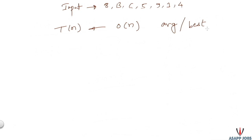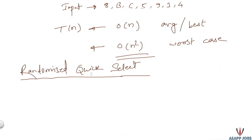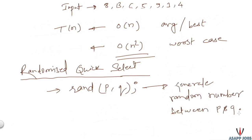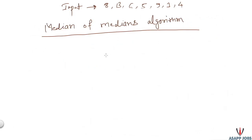This solution has linear time complexity in average and best cases, but O(n²) in the worst case. To optimize from O(n²) to linear time we need to improve the pivot selection strategy. There is a method called Randomized Quick Select, where we select the pivot randomly using a rand function passing the starting and last index of the current working sequence. It generates a random number between p and q as the pivot index. Selecting the pivot through a randomized function gives expected time of O(n). A proof link and an MIT video lecture are mentioned in the description.